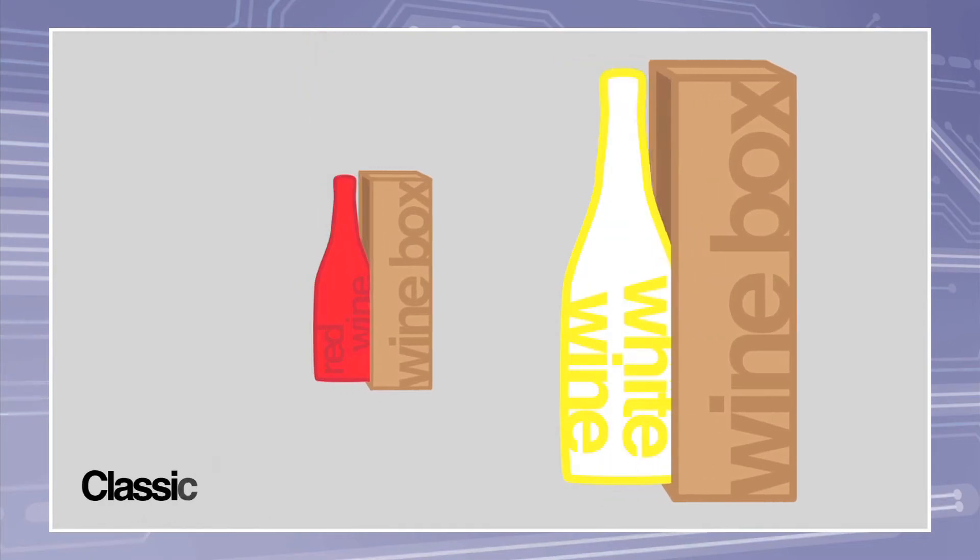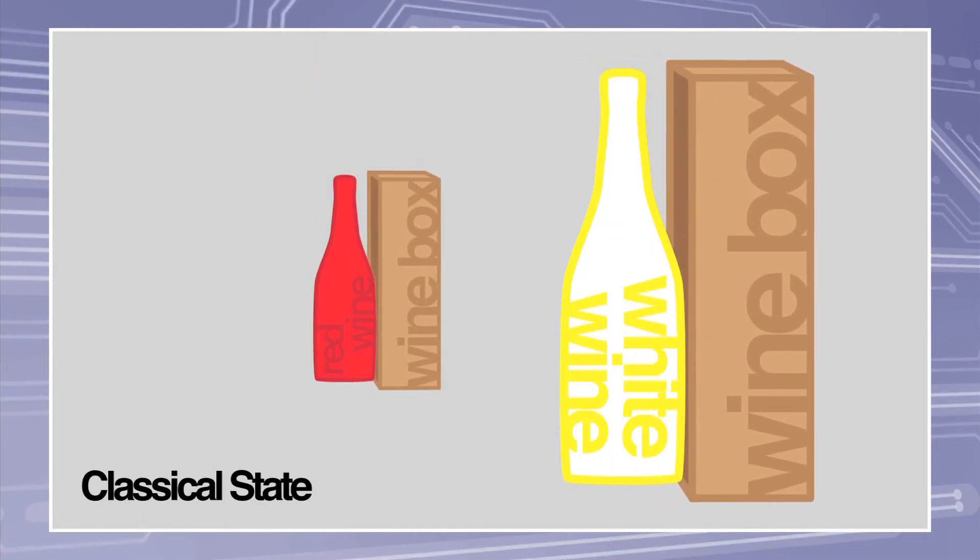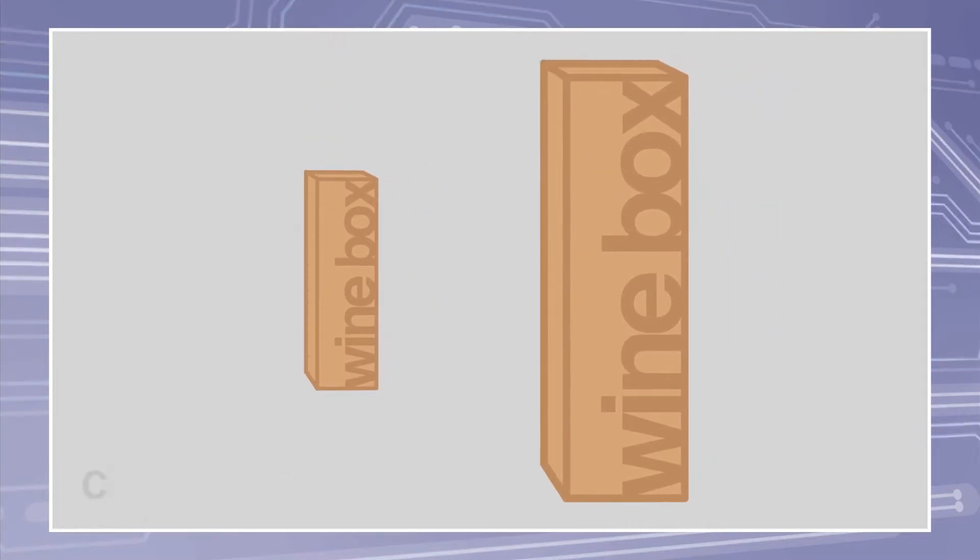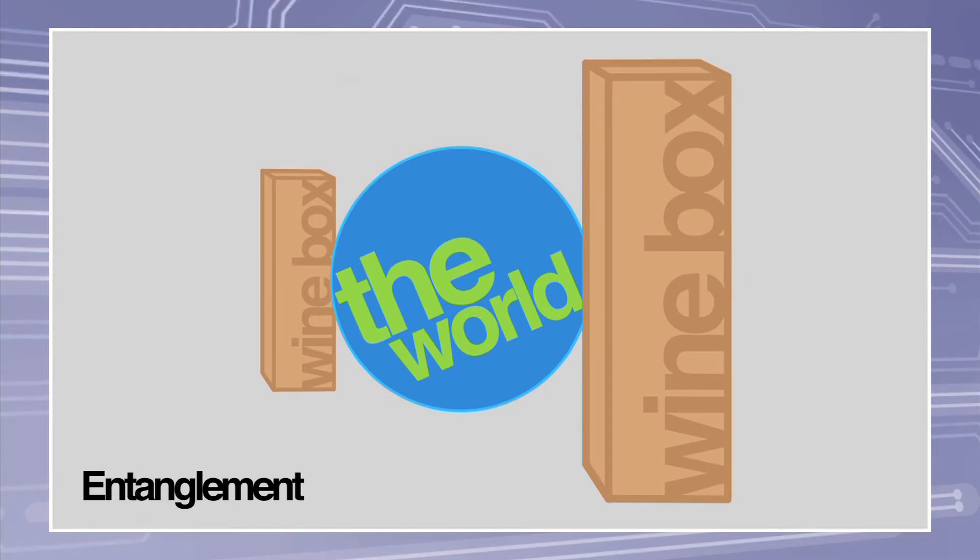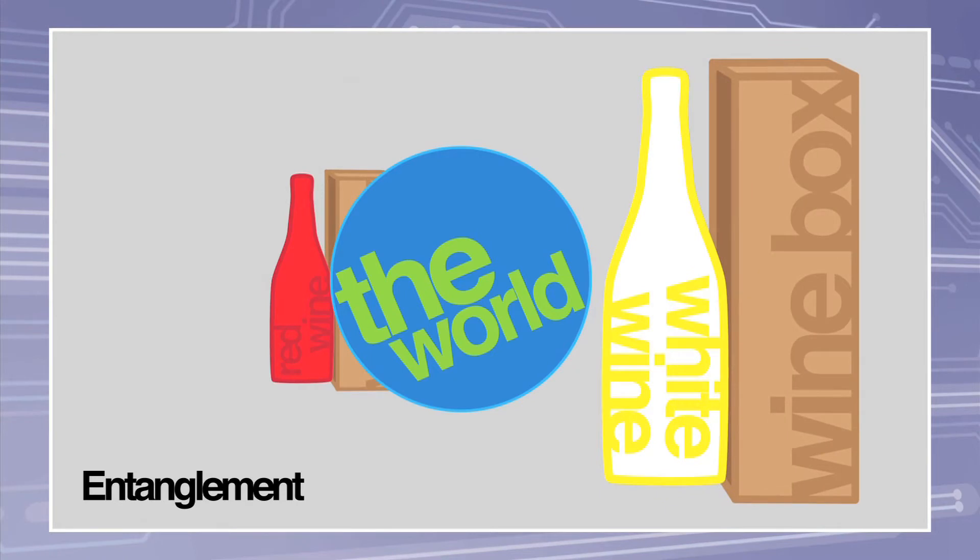Once the box is opened, however, you will find only one bottle, having determined whether it is red or white, and collapsing the superposition into a classical state. Now suppose you know your friend also sent the other bottle in a box somewhere else, perhaps to a relative on the other side of the world. Your box of wine can be said to be entangled with the other. The instant you open your box and determine whether your wine is red or white, you also collapse the state of the other box of wine as you have determined its color as well.